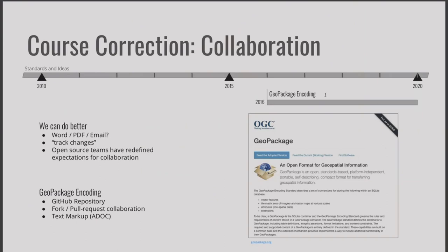Another course correction I'd like to talk about is the GeoPackage standard defined in 2016, which showed how the OGC could start to work in GitHub using open source workflows that we've pioneered in our community. So rather than using PDFs and Word and track changes, they're starting to use GitHub and pull requests — and if you haven't seen this new approach, it's really about time.